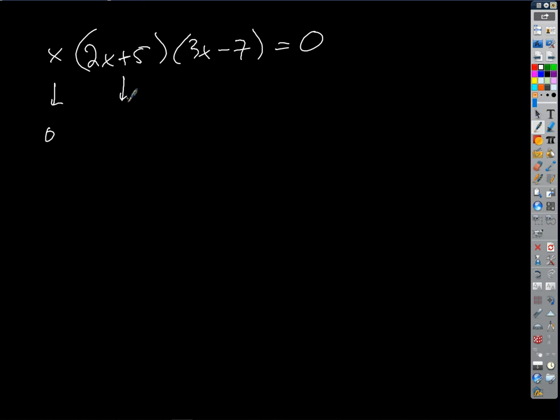The way we get this is we get 2x plus 5 equals zero. We could write this if we wanted to then as x plus 5 halves if I divide. We don't necessarily do this step, but I want to show you that it could be there. x plus 5 halves equals zero if I divide each side by 2 to make that an x. Do you see that? And so that's the same thing as x minus negative 5 halves equals zero. So what's the solution there? Negative 5 halves.